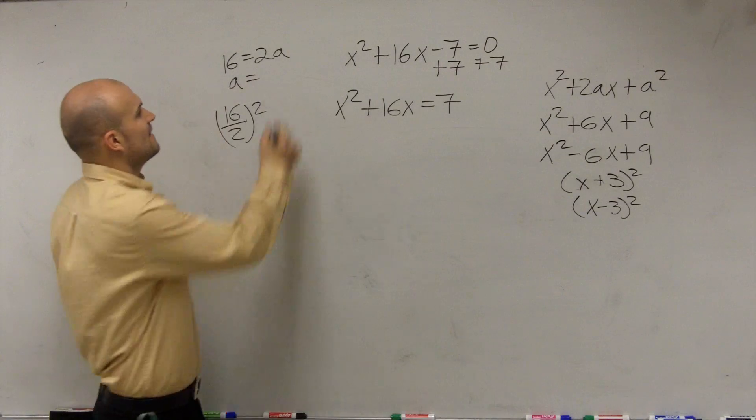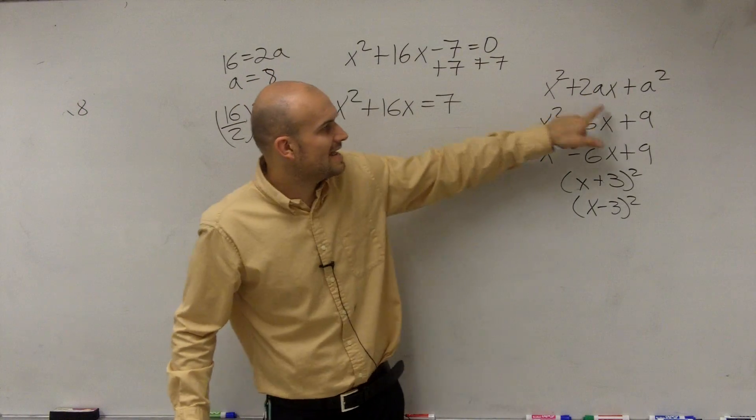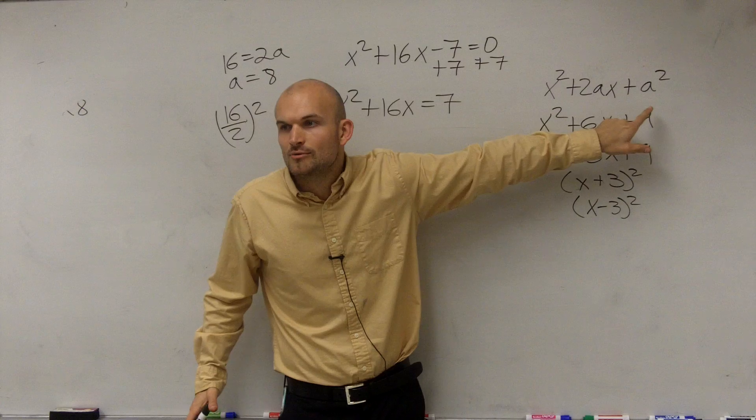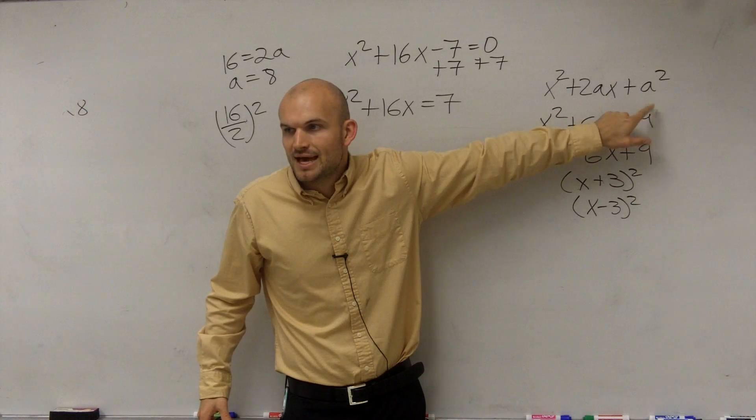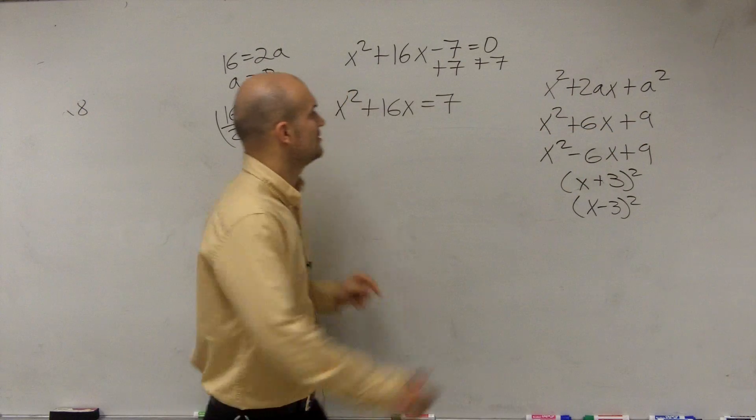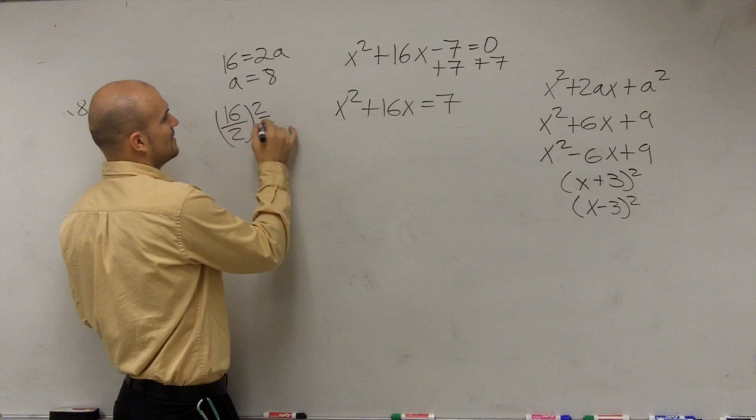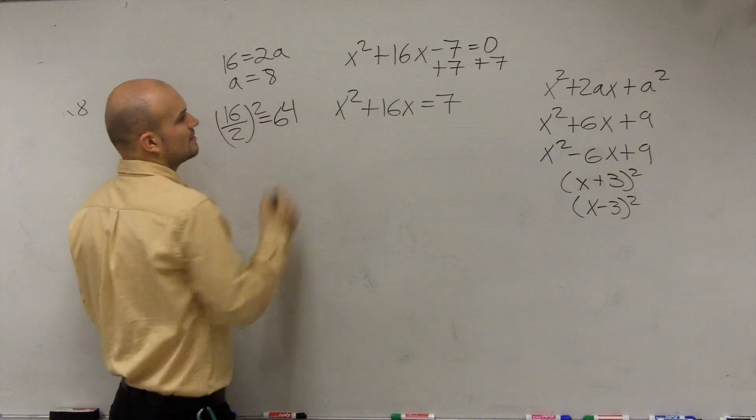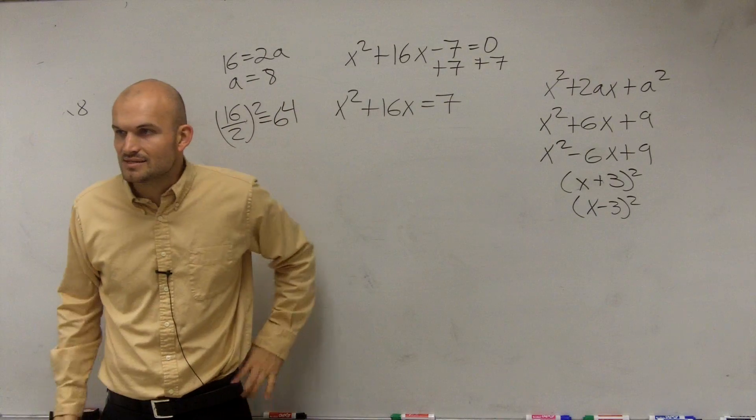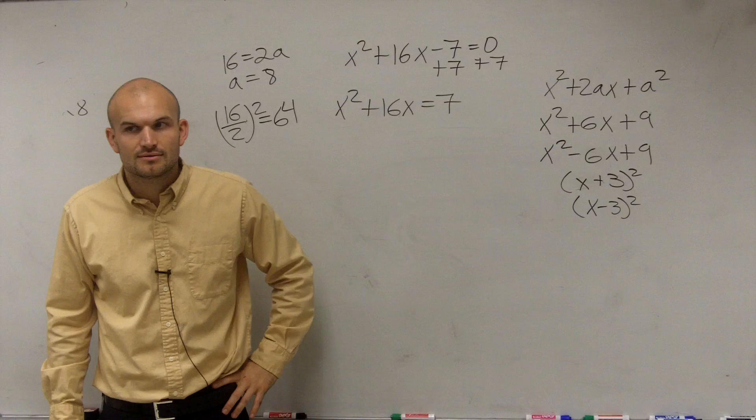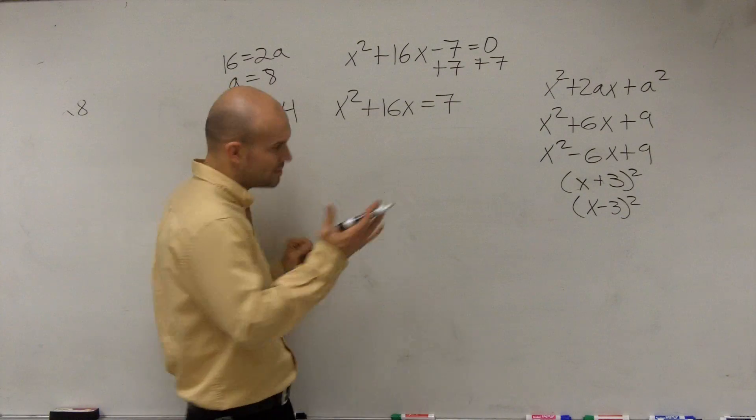And that's where this whole 16 divided by 2 squared comes from. Because if a is 8, then we got a is 8. Then what do we do to create a perfect square trinomial? What do you do with the a? Square it. So, and then 8 squared is 64. Does that make sense on kind of what I did?